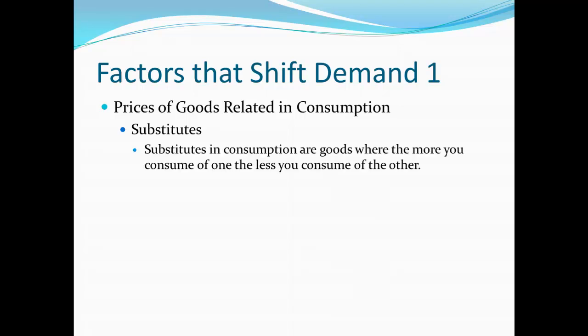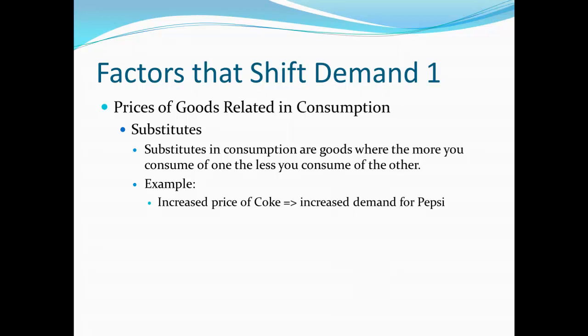In consumption, it's very similar: if something is a substitute in consumption, it's a good where the more you consume of one, the less you tend to consume of the other — like a substitute teacher who tends not to be in the classroom when the regular teacher is there. One example is the relationship between Coke and Pepsi. Generally, we don't consume these together. If the price of Coke increases, people switch to Pepsi, so there would be an increased demand for Pepsi. On the other hand, if Coke becomes cheaper, we'd see a decreased demand for Pepsi.